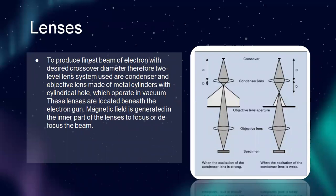Next, I will explain lenses. To produce the finest beam of electrons with the desired crossover diameter, a two-level lens system is used consisting of condenser and objective lenses made of metal cylinders with a cylindrical hole, which operate in vacuum. When these lenses are located beneath the electron gun, a magnetic field is generated in the inner part of the lenses to focus or defocus the beam. The diagram shows strong versus weak excitation of the condenser lens, specimen, objective lens, objective lens aperture, condenser lens, and crossover.